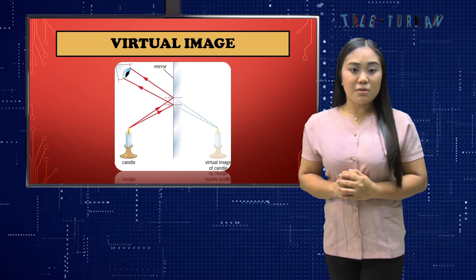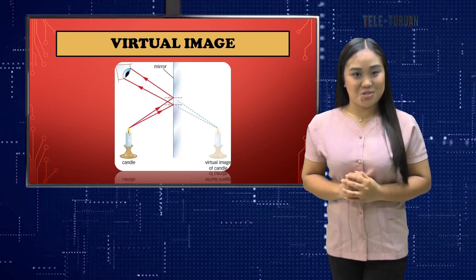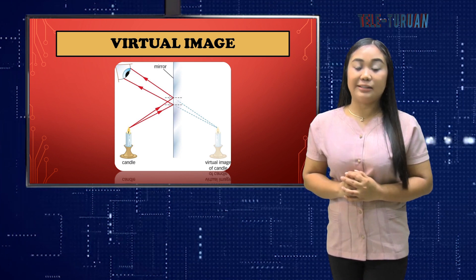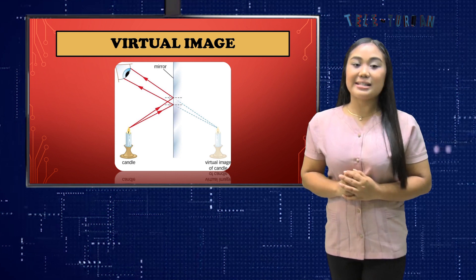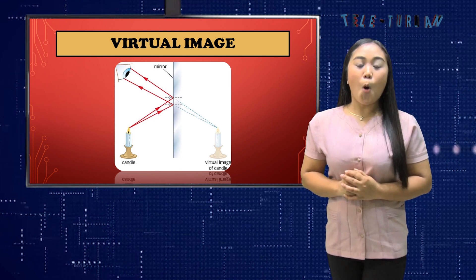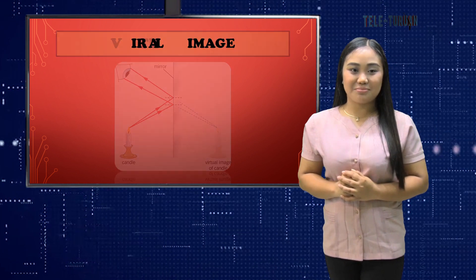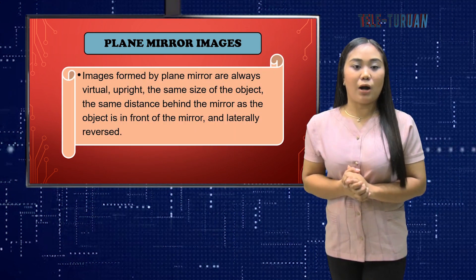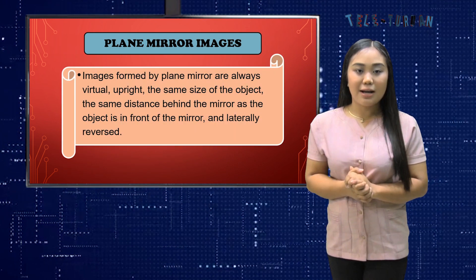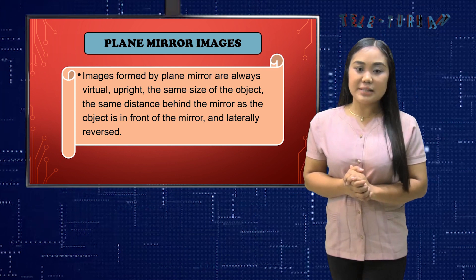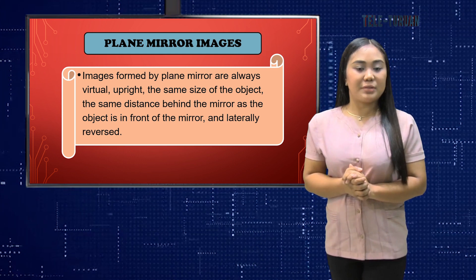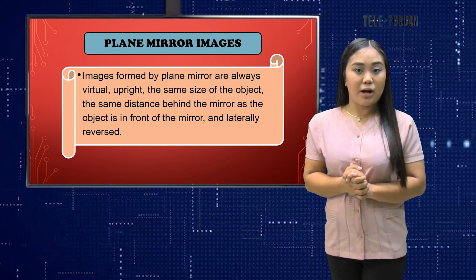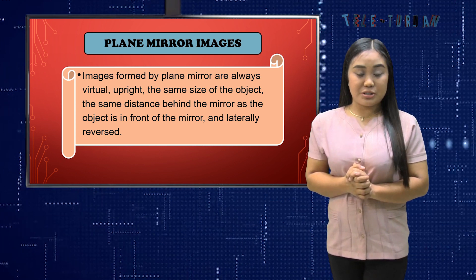Hence, a virtual image cannot be projected on a screen. Real and virtual images may be bigger than the object, the same size as the object, or smaller than the object. Images formed by a plane mirror are always virtual, upright, the same size as the object, and the same distance behind the mirror as the object is in front of the mirror, and laterally reversed.